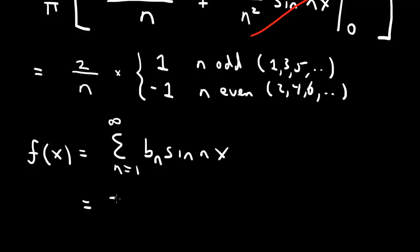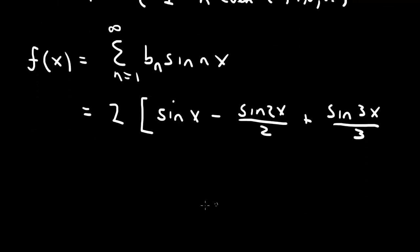And we've determined the bn's, so let me just write it out. So we have a factor of 2 in front. And then the first term is n equals 1. So it's plus 1 over n, which is 1. So the first term here will be sine x. The next term is minus. So it's minus sine 2x divided by 2. And then plus term. So plus sine 3x divided by 3. Then minus sine 4x divided by 4. And you see the pattern here.